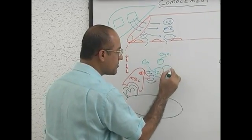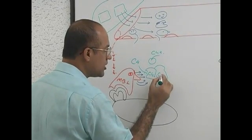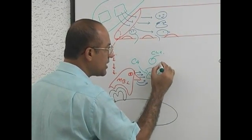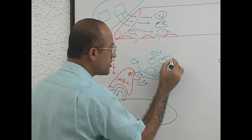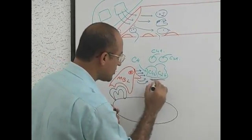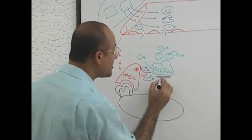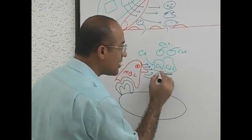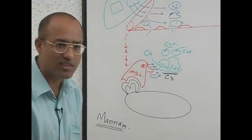And they can also activate, what is this? C2B. And what is lost there? C2A. What is this produced? Please tell me. C3, yes, C3 convertase. Yes, C3 convertase. Like the C3 convertase of classical pathway.